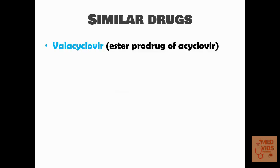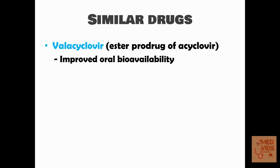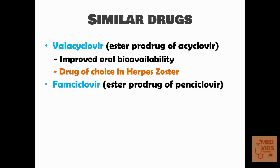Similar drugs to acyclovir include valacyclovir, which is an ester prodrug of acyclovir with improved oral bioavailability. Whereas only 20% of oral acyclovir is absorbed, up to 60% of valacyclovir is available for action. Valacyclovir is the drug of choice in herpes zoster. Famciclovir is another drug which is an ester product of penciclovir.